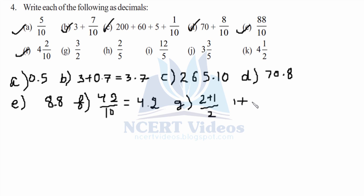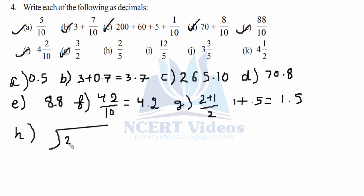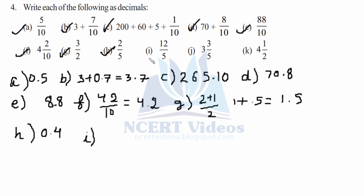Part H: two over five — we divide it: 2 divided by 5. Place a decimal, 2.0 divided by 5 — five goes into twenty four times, remainder zero. So it is 0.4. Part I: twelve over five can be written as ten plus two over five. That gives you 2 plus — we calculated earlier that two over five is 0.4 — so it means 2.4 is your answer.